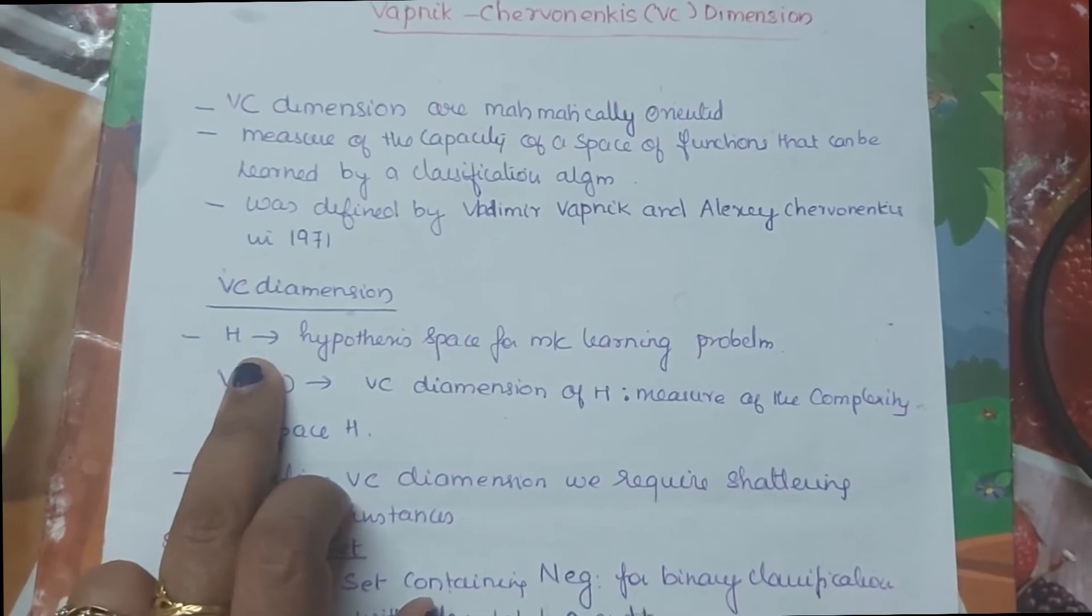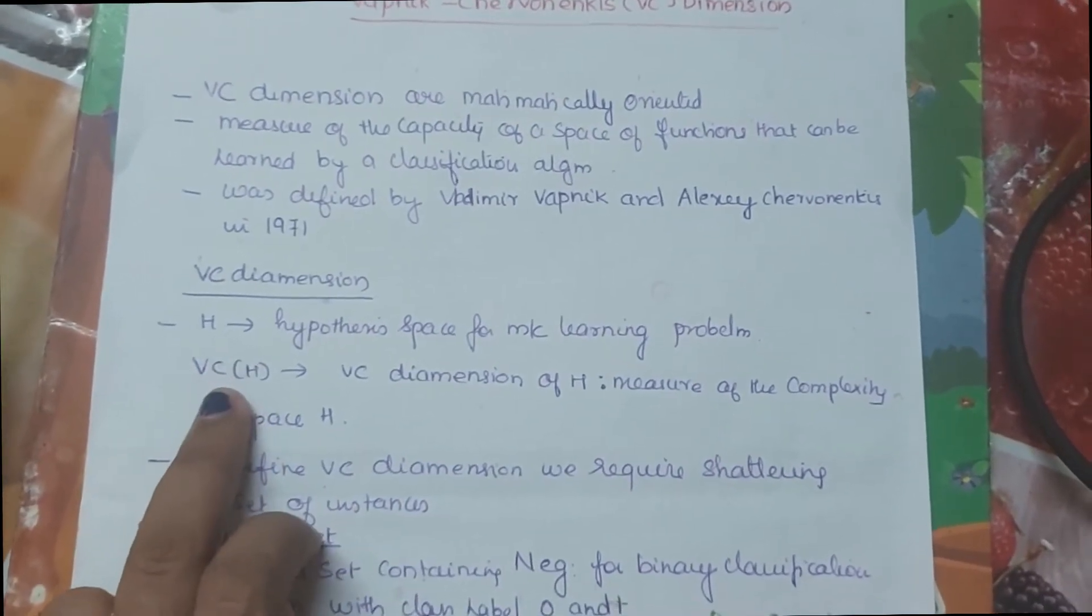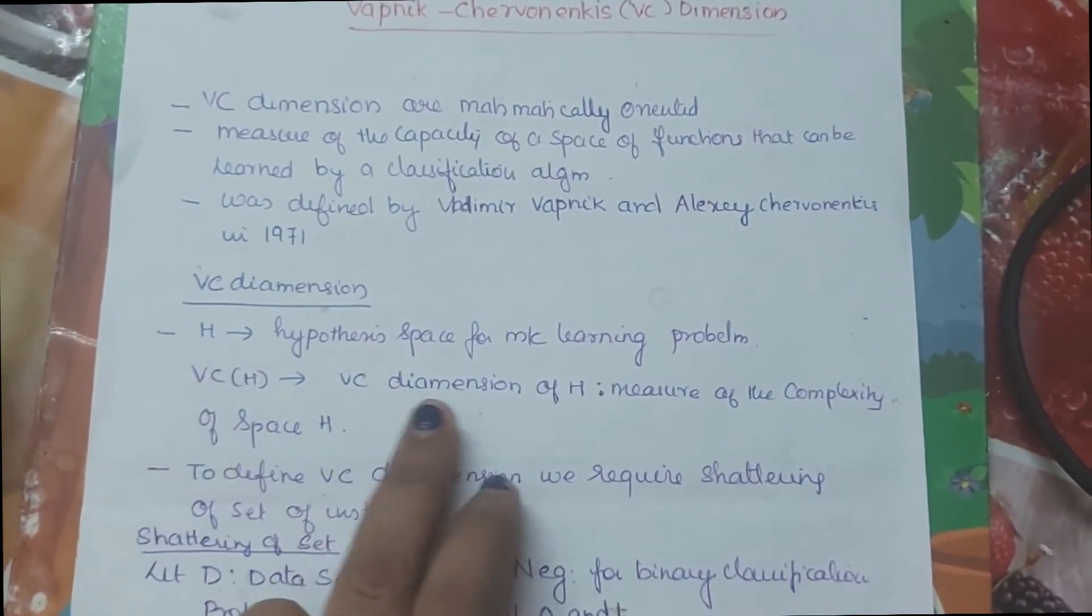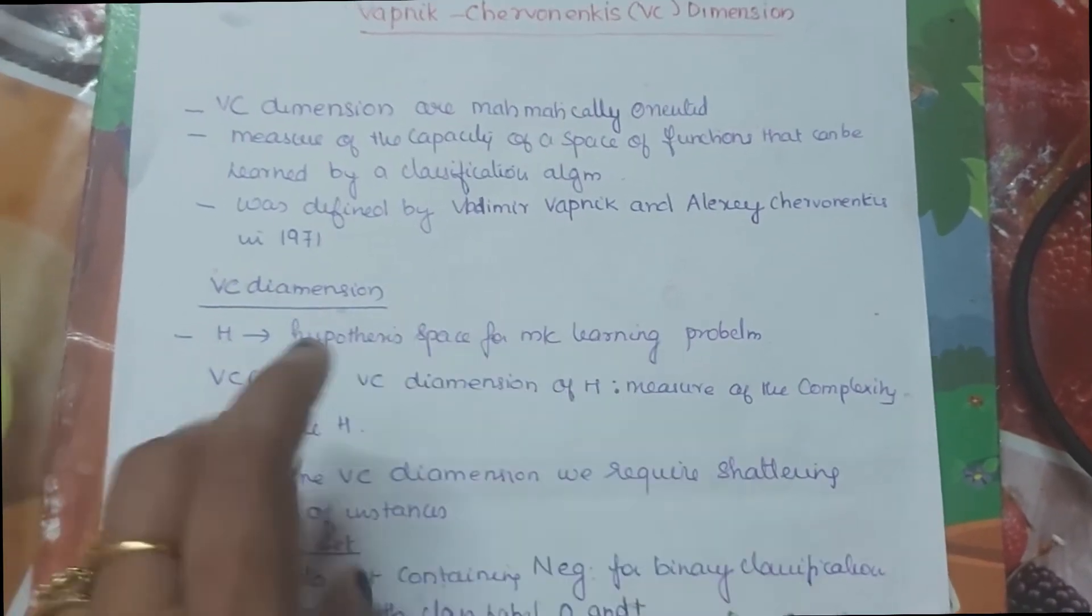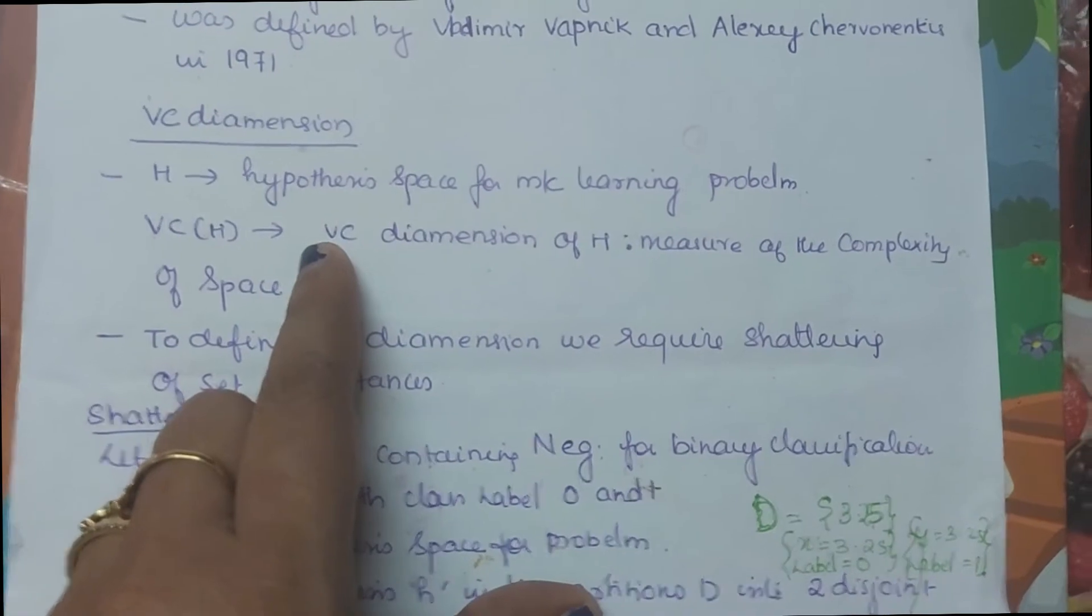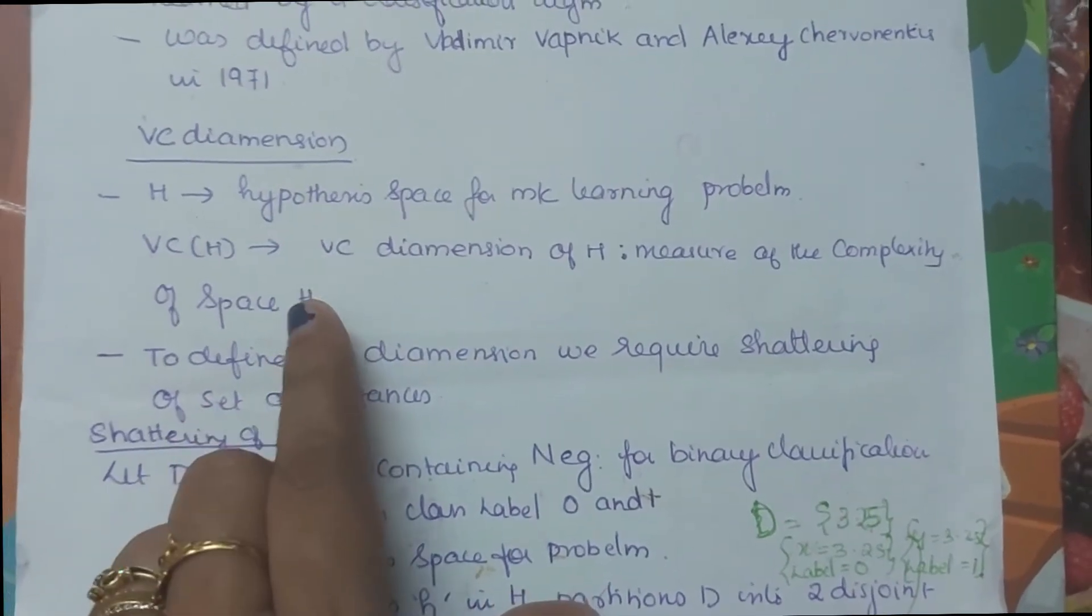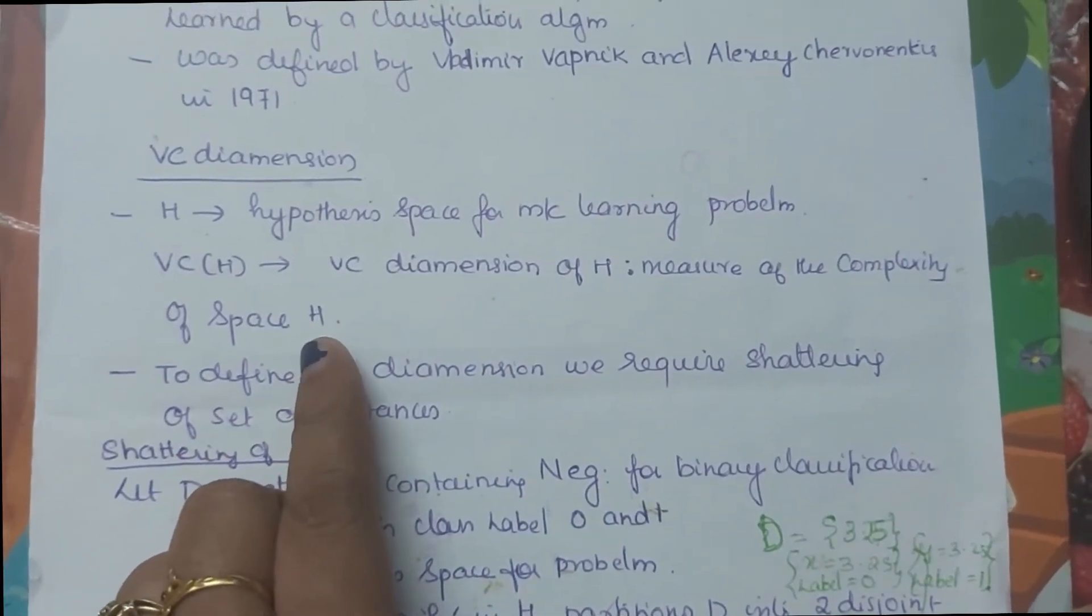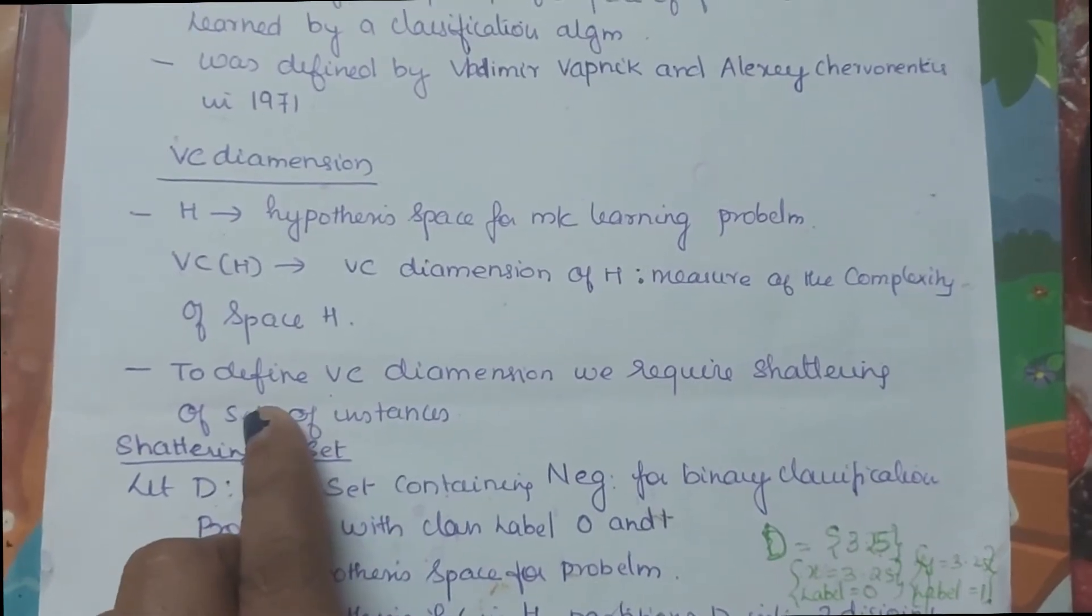So it is denoted by capital letter H. And VC of H is VC Dimension of H. It is a measure of complexity of space H.